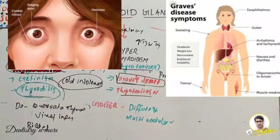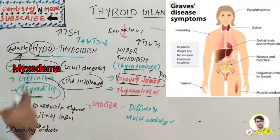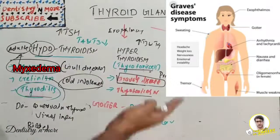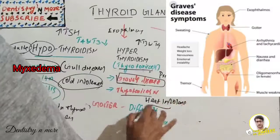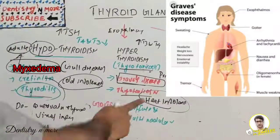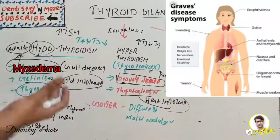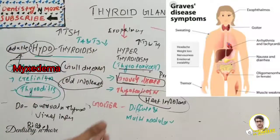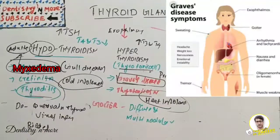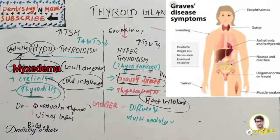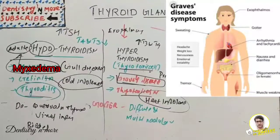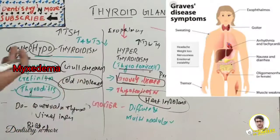The basal metabolic rate is increased in hyperthyroidism — opposite of hypothyroidism. There is heat intolerance (compared to cold intolerance in hypothyroidism), weight loss, vitamin B and C deficiency, tachycardia, high cardiac output, and decreased serum lipid levels. Learning hyperthyroidism is easy if you know hypothyroidism, as the features are mostly opposite, but never get confused.